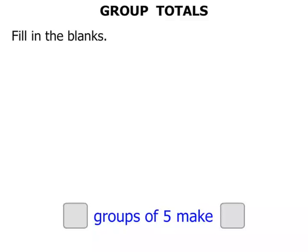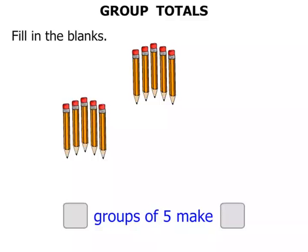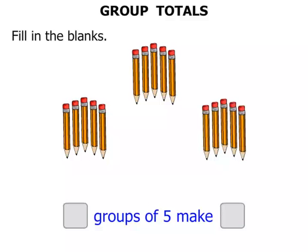Fill in the blanks. We have a sentence there with some blanks to fill in. We're talking about groups of five. We can see that we've got one group of five there. Five pencils in that group. A second group. And a third group. We've got three groups. So let's write the three down there.